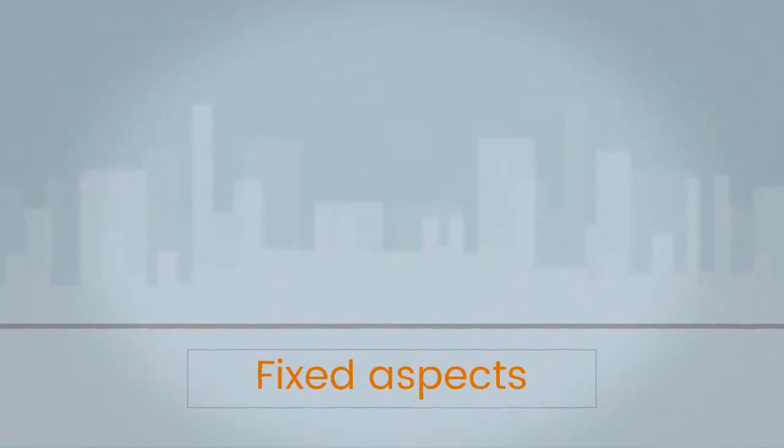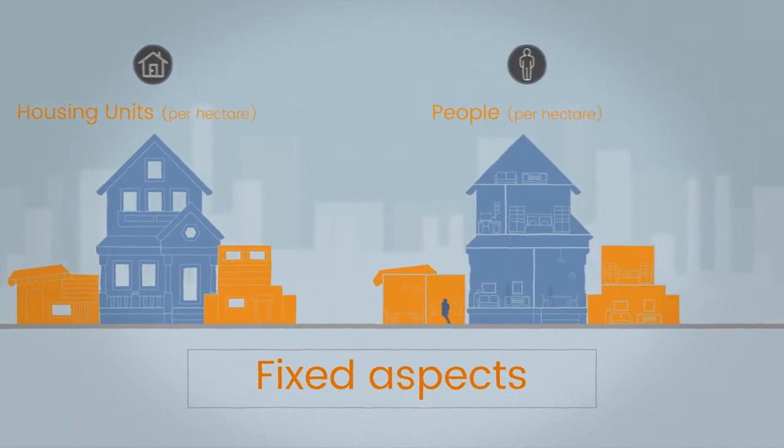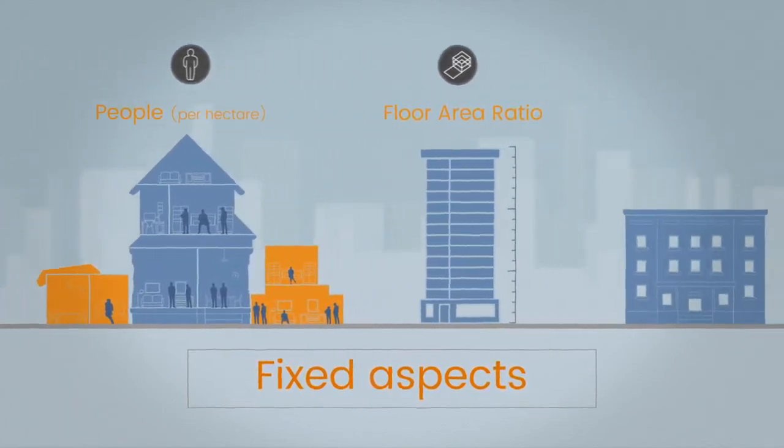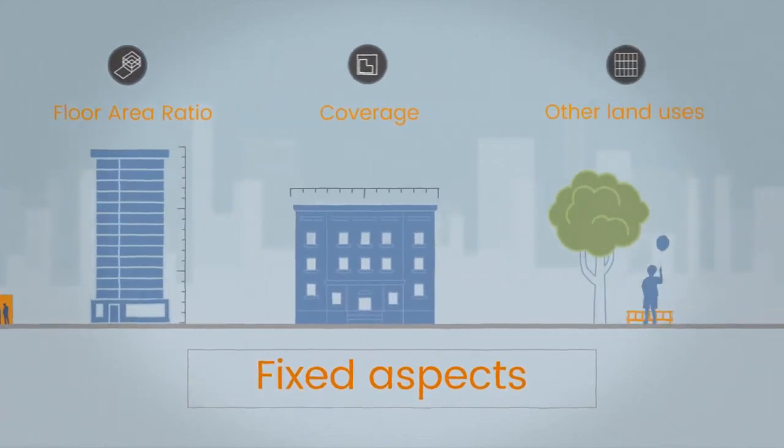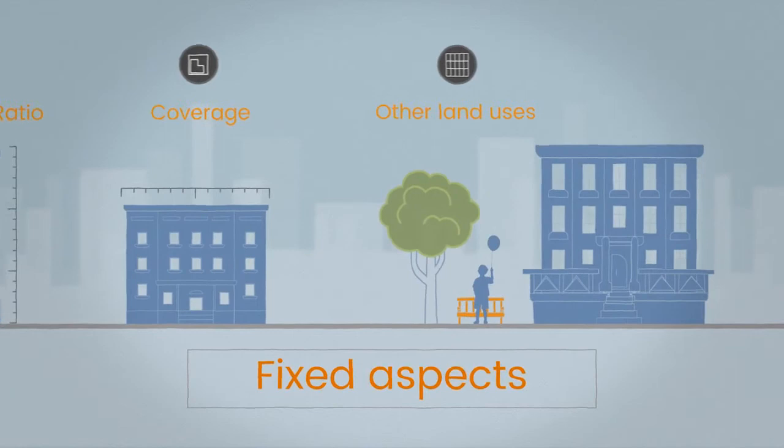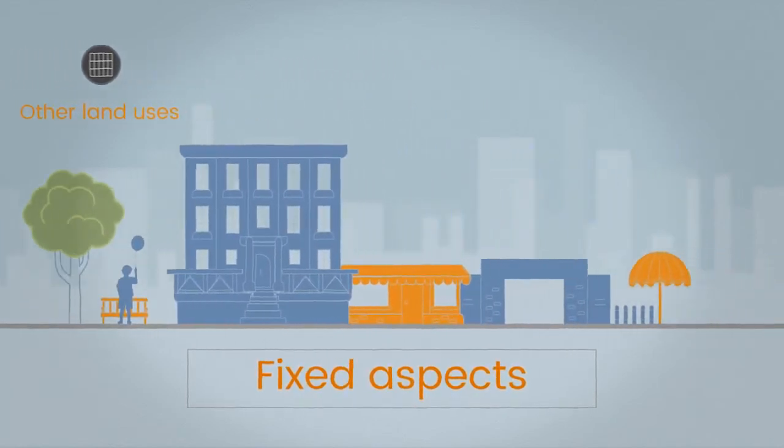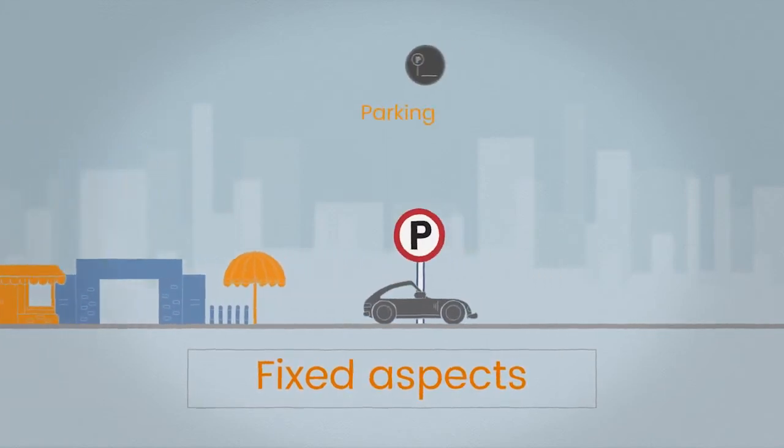There are fixed aspects that don't change over the short term: housing units per hectare, people per hectare, floor area ratio, coverage, and other land uses, which are the spaces provided for activities other than housing like parks, schools, restaurants, offices, shops, and libraries, and the amount of parking bays per hectare.